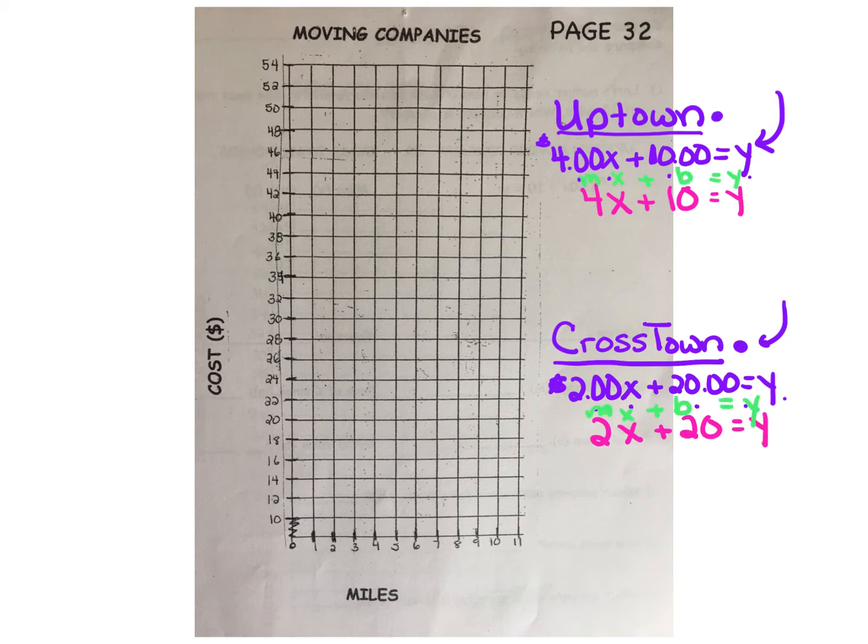We know our slope is 4, so M equals 4. But written as a ratio, it really is $4 per one mile, which means up $4 over one mile. And our initial start value of b is $10.